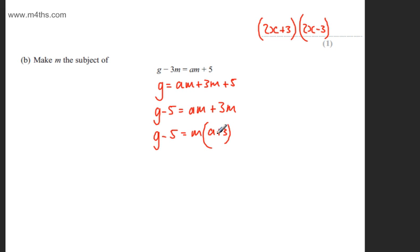All we need to do now is divide both sides of the equation by the content of the bracket. So we'll have G minus 5 over A plus 3 is equal to M.